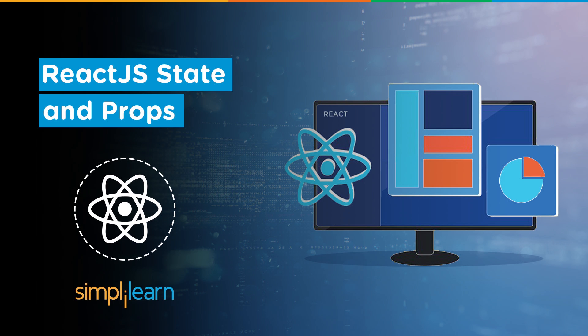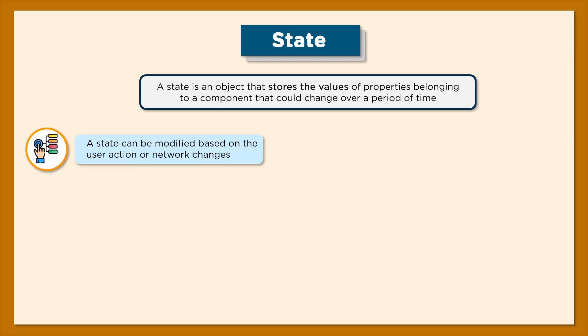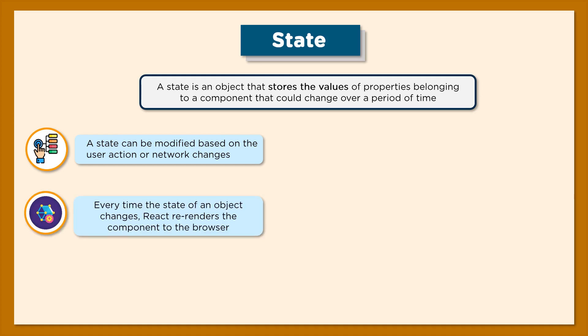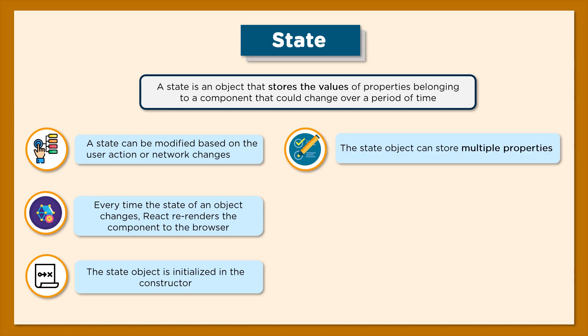First we will understand how React state works, and then we will dive into props. Typically, a state is an object that stores the values of properties belonging to a component. These values can change over time either via user interactions or network changes, and state helps facilitate this functionality. Every time the state changes, React re-renders the component to the browser.